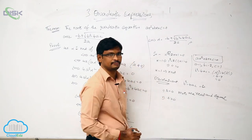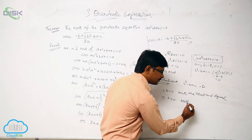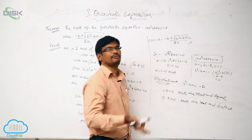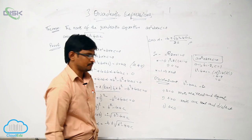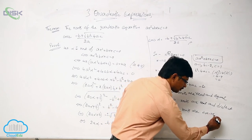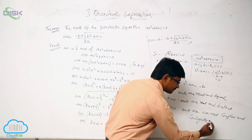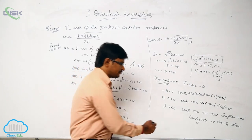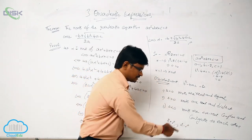Second case: if delta is greater than 0, the roots are real and distinct — meaning both roots are different. Third case: if the discriminant is less than 0, the roots are non-real, complex, and conjugate to each other. For example, in complex numbers, if one value is 2 + i, its conjugate is 2 − i.